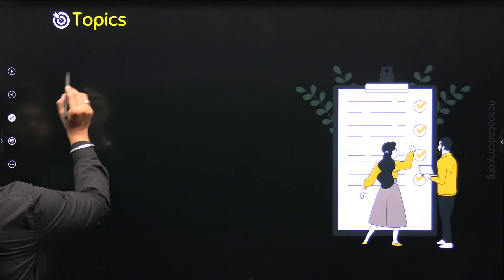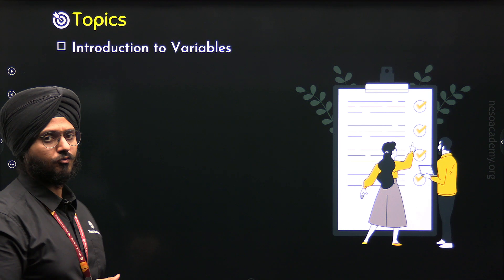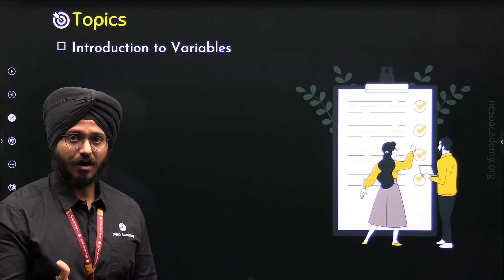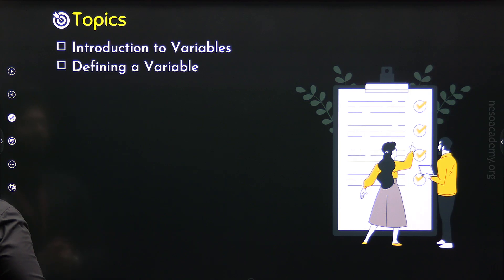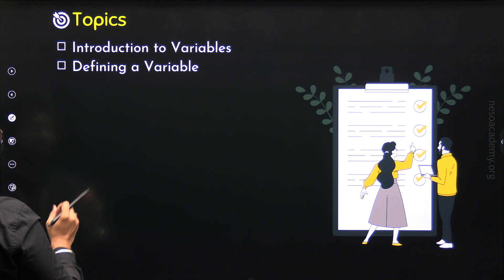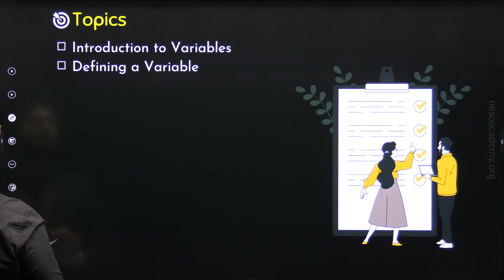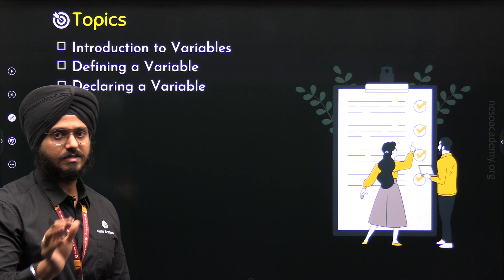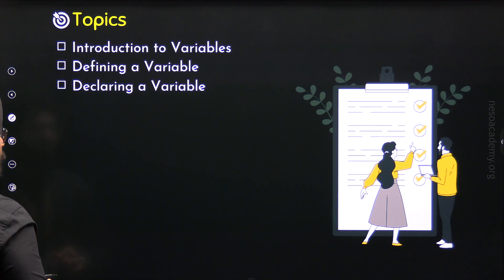The first topic of this lecture is Introduction to Variables — I will introduce you to what variables are in C++. Then we will move to the second topic where we will understand how to define a variable. After that, we will move to the third topic where we will understand how to declare a variable in C++. So these are all the topics we need to deal with in this lecture.